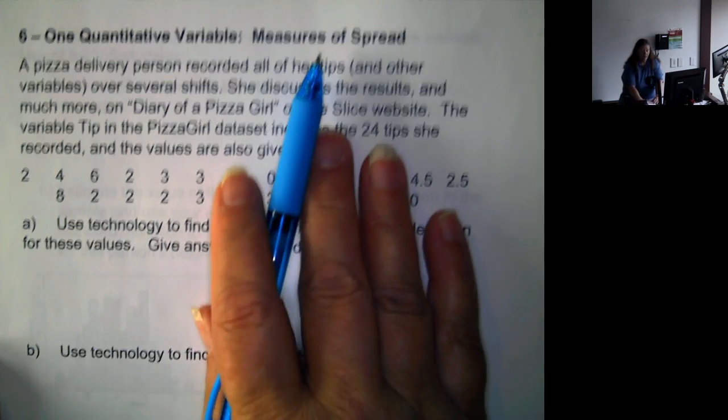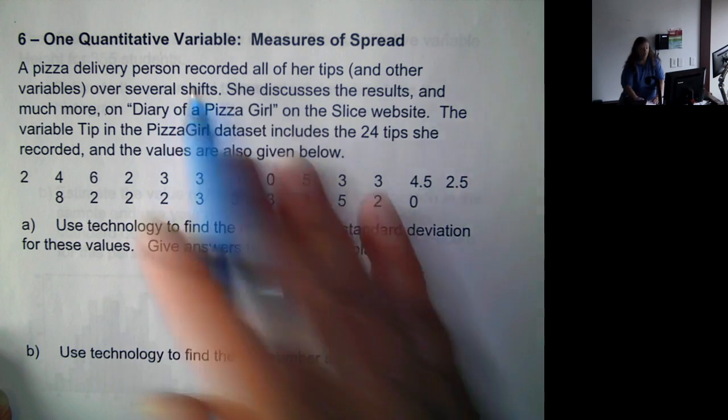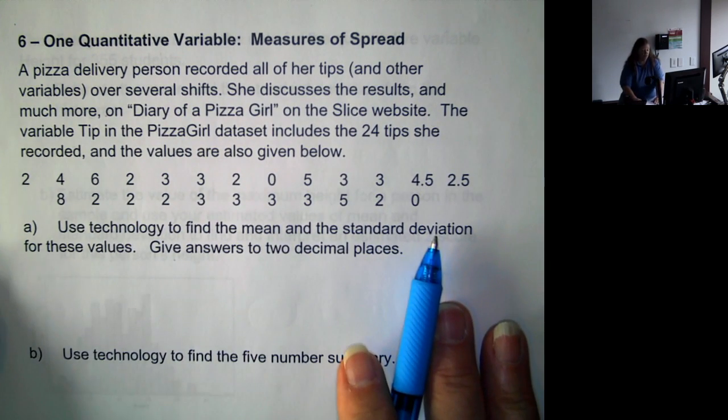Okay, we looked at the shape and the center for one quantitative variable. Now we're going to look at measures of spread.